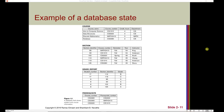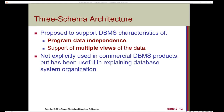Let's take a look at an example of a database state. Notice that here we have actual instances of each entity — in other words, we have data. If we look at the course table, we can still see the schema: course name, course number, credit hours, and department. But we also have specific instances of each course — for example, data about an intro to computer science course, a data structures course, a discrete mathematics course, and a database course.